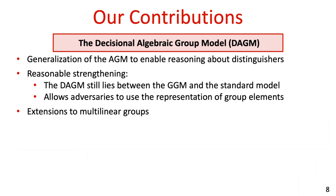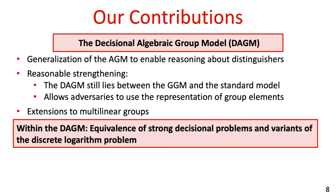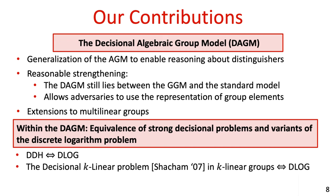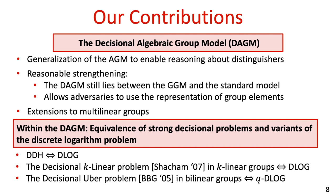We then show that our model is useful for reasoning about decisional problems. Within our model, we prove the equivalence of strong decisional problems and the discrete logarithm problem or a simple variant thereof. Concretely, we show that the decisional Diffie-Hellman problem for algebraic distinguishers is equivalent to the discrete logarithm problem. We then generalize to show that the decisional k-linear problem, introduced by Shacham, is equivalent within our model to discrete log, even in groups with a k-linear map. Finally, we show the decisional uber problem in bilinear groups, presented by Boneh, Boyen, and Goh, is equivalent in our model to the QD log problem, a parameterized higher-order version of discrete logarithm.